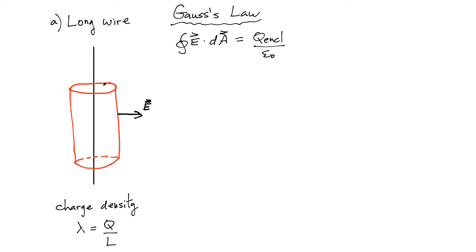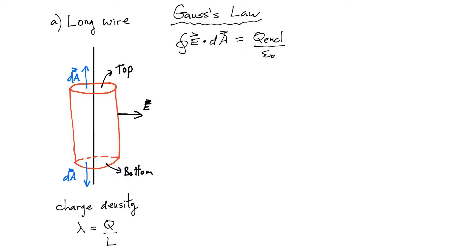However, the top and the bottom we don't have to worry about, because the normal for the top and the bottom is going to point axially. The area vector for the top and the one for the bottom — however, we know that the electric field is going to point radially outwards. Therefore, those vectors are going to be orthogonal and you're not going to get any contribution from the top and bottom surface. There is no electric flux going through the top surface nor the bottom. All of the electric flux is going through the side. So that really simplifies our expression — all we have to do is evaluate this on the side.